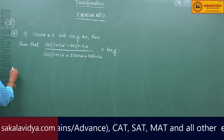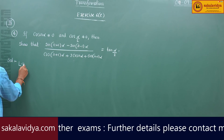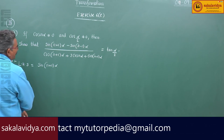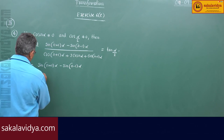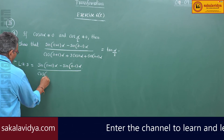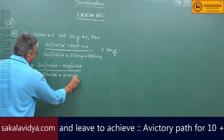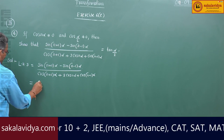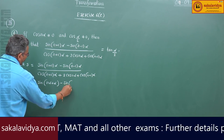Solution: take the left hand side — sin(n+1)α minus sin(n-1)α in the numerator, and cos(n+1)α plus cos(n-1)α in the denominator. Expand: numerator becomes sin(nα + α) minus sin(nα minus α), denominator becomes cos(nα minus α) plus cos(nα plus α) plus 2cos(nα).